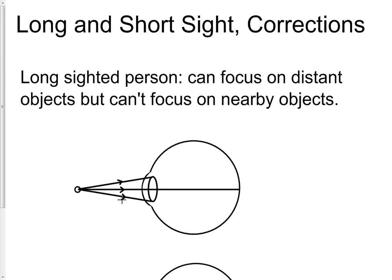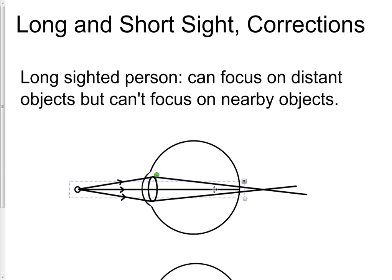What the eye has to do is focus this light to a point. However, with a long-sighted person looking at a nearby object, their eye can't quite focus enough. The rays of light aren't focused sharply on the retina — if you extend the lines, these rays would come to a focus somewhere behind the retina. In reality they hit the retina but don't form a sharp image, so it's going to be blurry.